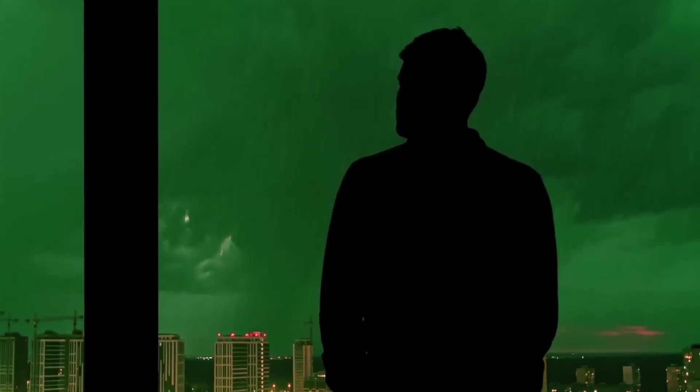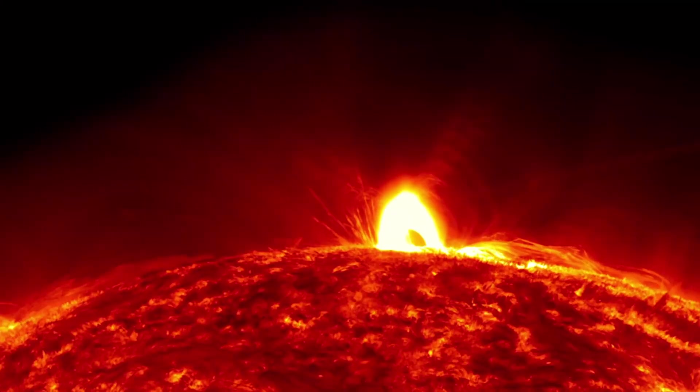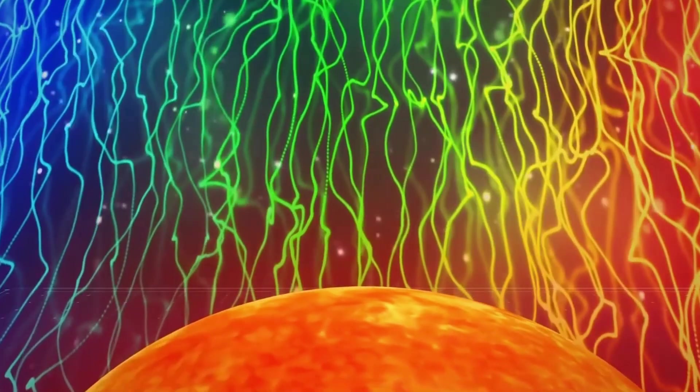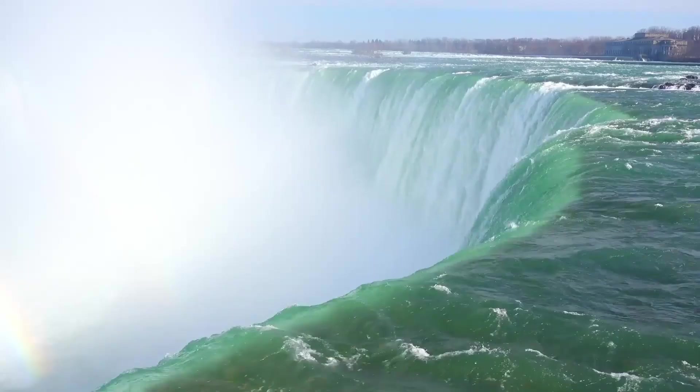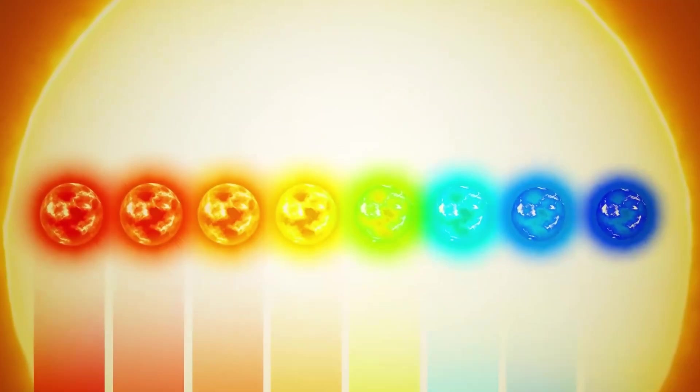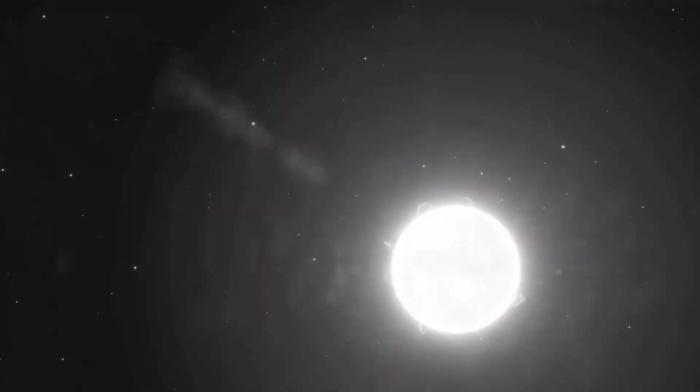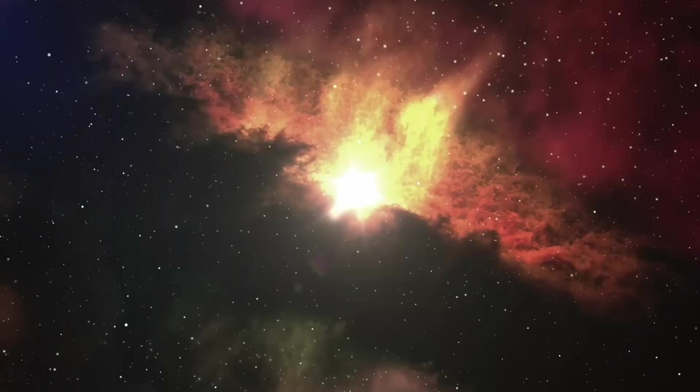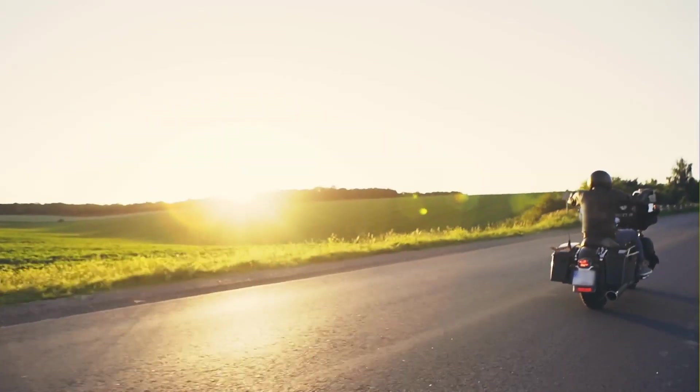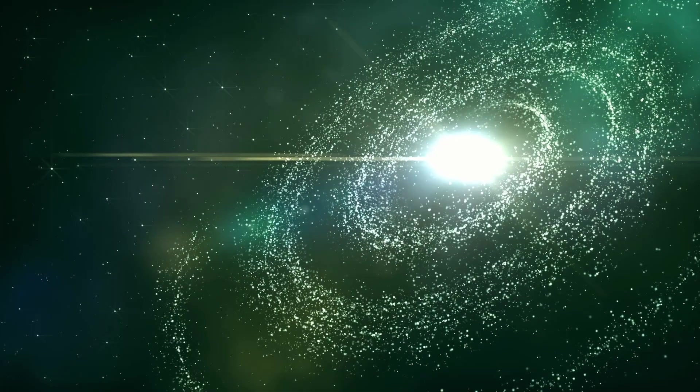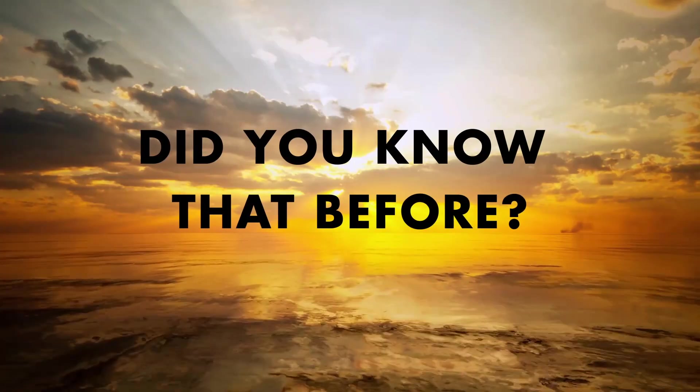Yep, I know it's hard to believe, but truth can be hard sometimes, eh? Scientists have studied the sun's light spectrum and determined that it emits light across a broad range of colors, including yellow. But it also contains all the colors of the rainbow. In space, where there is no atmosphere to scatter the light, the sun would appear white to observers. So, while the sun may appear yellow from our vantage point on Earth, its true nature is a brilliant, luminous white star at the center of our solar system. Did you know that before?